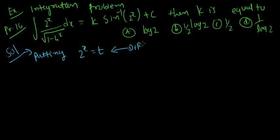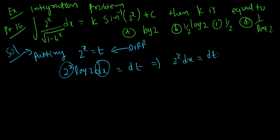Taking differentiation, 2 raised to x log 2 dt. So 2 raised to x dx equals dt by log 2. Therefore 2 raised to x dx equals dt upon log 2.